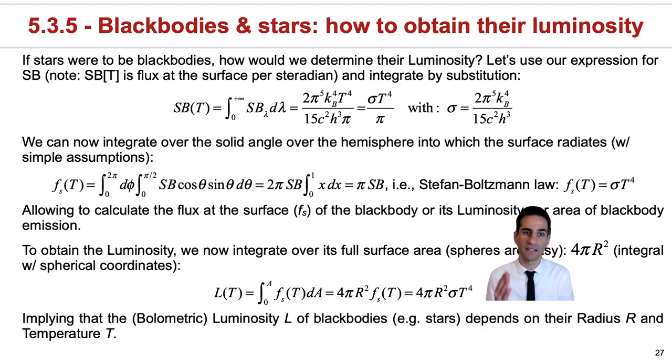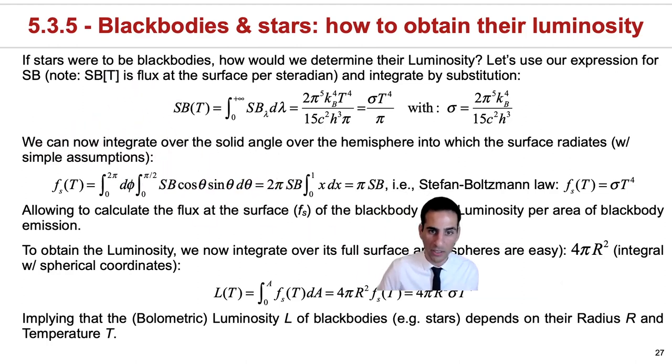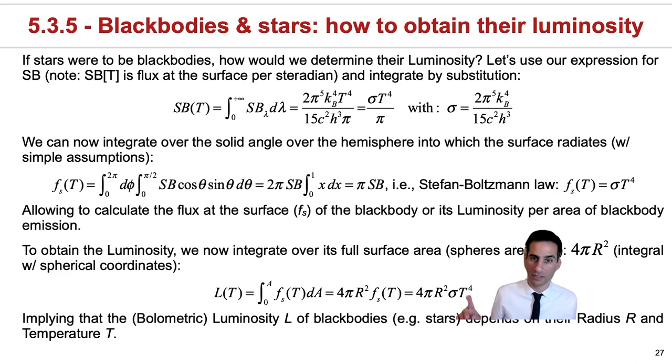What this implies is that the volumetric—because we're talking about the total luminosity, remember that the first thing we did right here was to integrate it over all wavelengths—so the volumetric, the total luminosity of blackbodies such as stars will depend on temperature most strongly, there's a power of four, but also on the radius, there is a power of two.